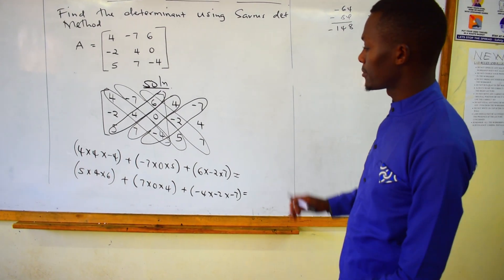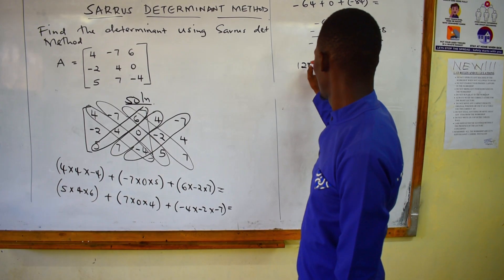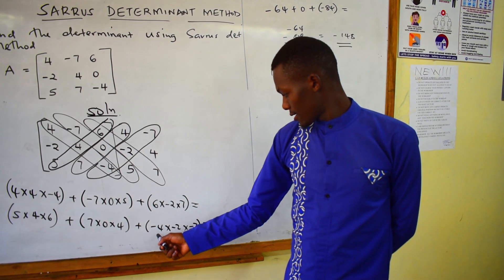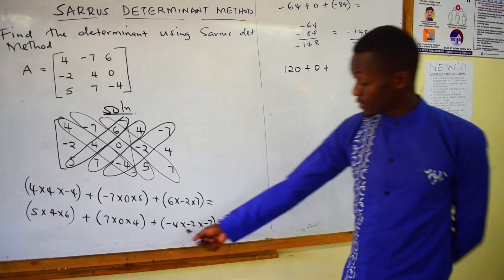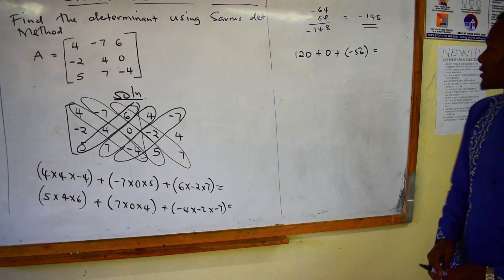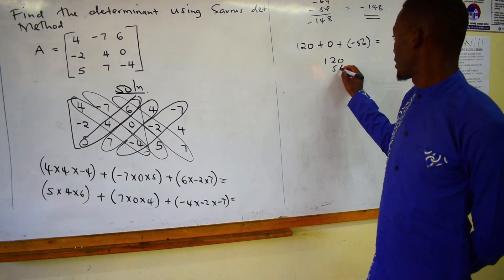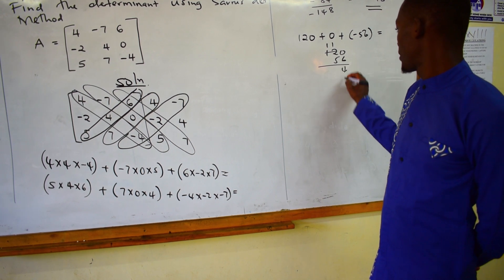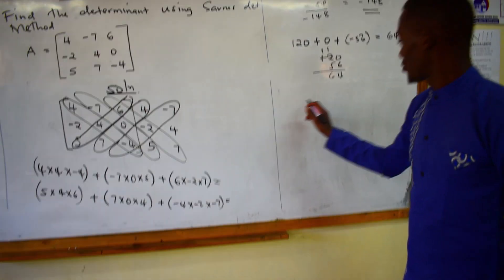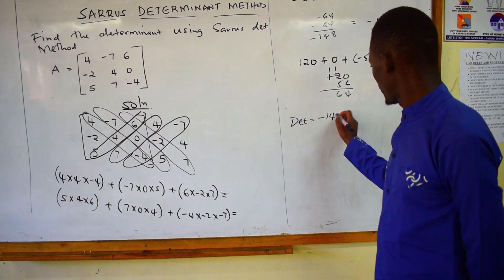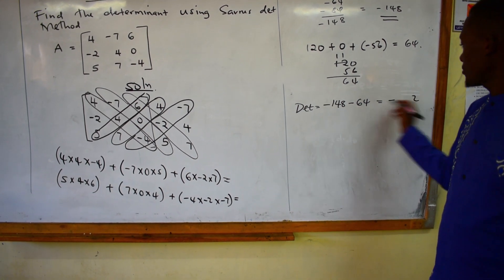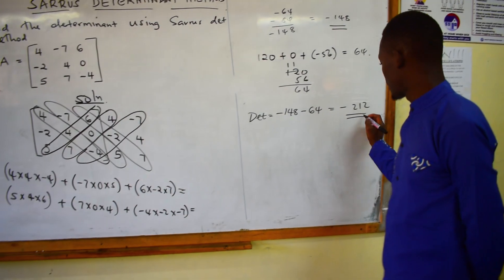Then for the other diagonal: 5 times 4 times 6 is 120. The middle term has a 0, so it becomes 0. Then negative 4 times negative 2 is positive 8, times 7 gives 56 — wait, negative 56. So 120 minus 56 gives 64. Therefore, the determinant is negative 148 minus 64, which gives negative 212.